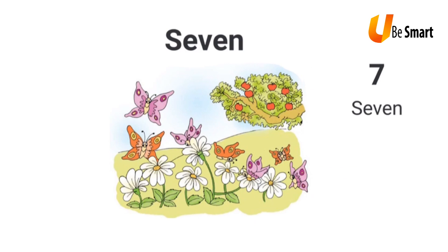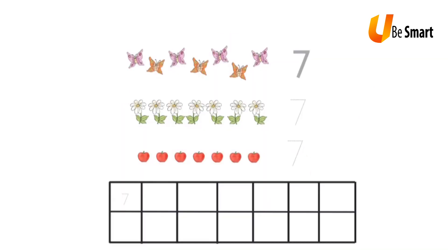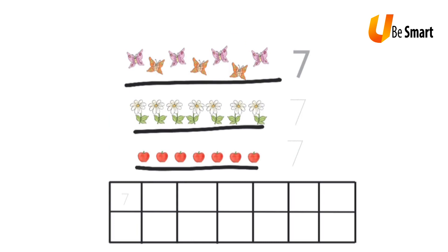In this picture, I see one, two, three, four, five, six, and seven butterflies. I see one, two, three, four, five, six, and seven apples. I also see one, two, three, four, five, six, and seven flowers. So I see seven apples, seven butterflies, and seven flowers. I write the number 7 along the dotted lines like this, and I also write the number in each of the boxes below.